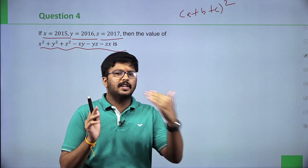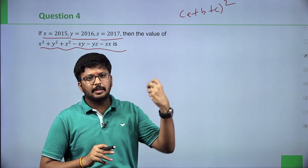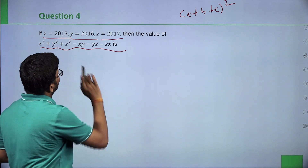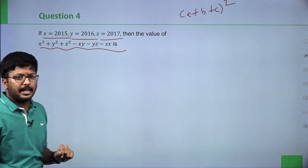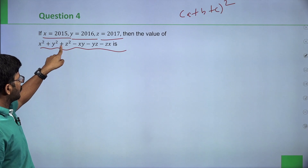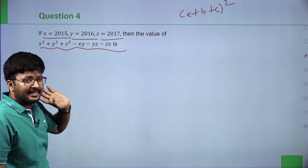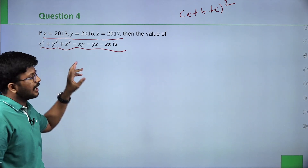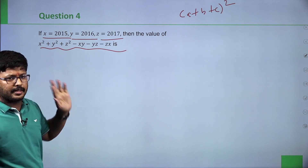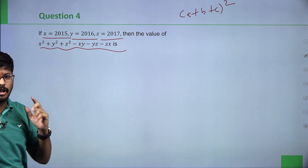The expression x square plus y square plus z square minus xy minus yz minus zx doesn't directly match the formula which has 2xy, 2yz, 2xz. So we need to think differently about how to solve this sum.